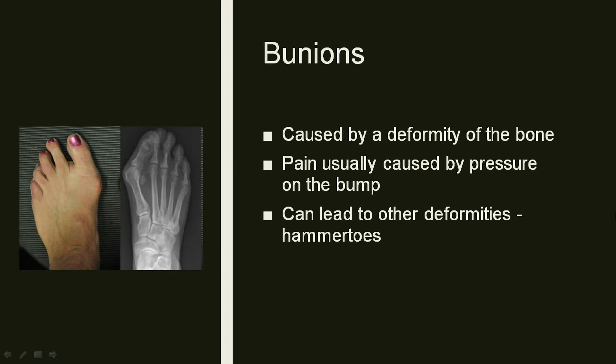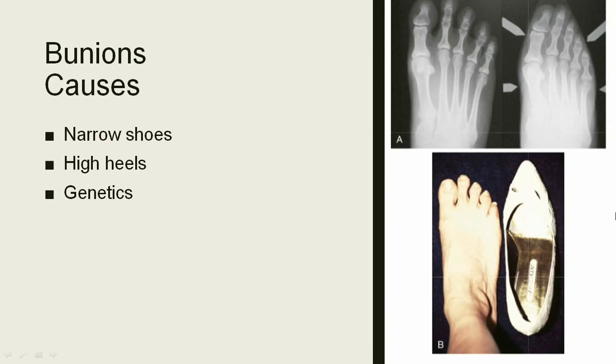People usually have pain around that prominence on the side of their foot, and it's worse with any shoes that put pressure in that area. If the bunion gets bad enough, it can start pushing on other toes and cause other deformities, crowding them and sometimes causing hammer toes. What causes a bunion? Most often it's different types of shoe wear, though there is also a genetic component. Studies show that even populations that don't wear shoes still have a small incidence of bunions, so even if you do everything right, there's still a possibility if you have a family history.